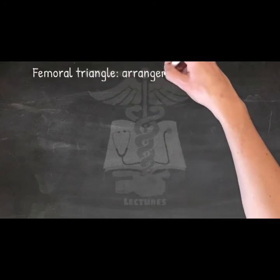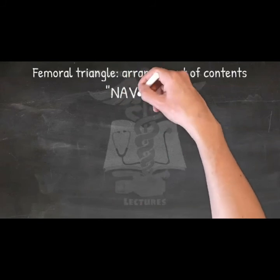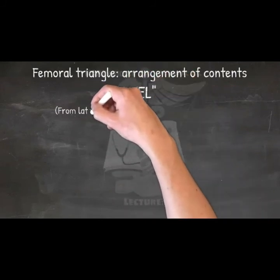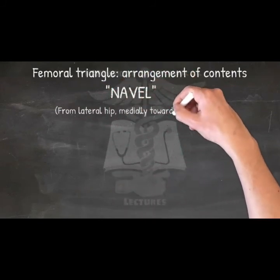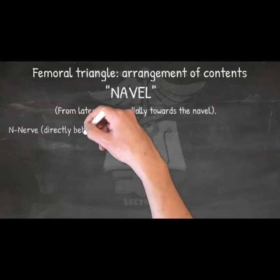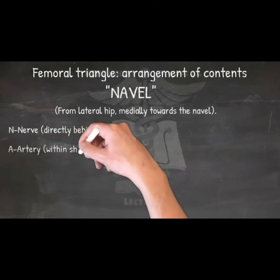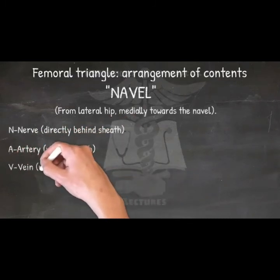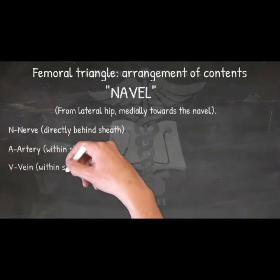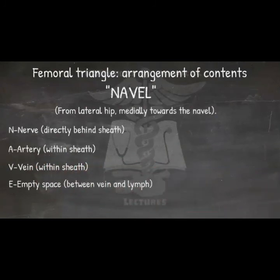Arrangement of contents in the femoral triangle — mnemonic: 'Navel.' From lateral to medial toward the navel: Nerve (directly behind sheath), Artery (within sheath), Vein (within sheath), Empty space (between vein and lymph), and Lymphatics.